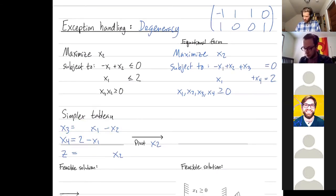The feasible solution that we're currently at is x1 is zero, x2 is zero. Therefore, I solve for x3, I get x3 is zero. And I solve for x4, I get x4 is two.